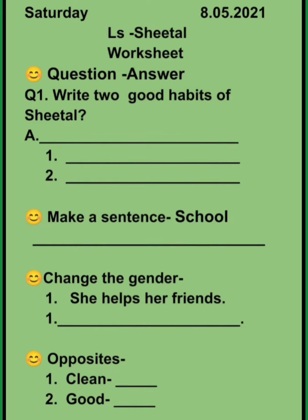The first work is question answer. The first question is: write two good habits of Sheetal. Children, we have already read the lesson and we know that Sheetal is a good girl. So you have to choose any two good habits of Sheetal and write.